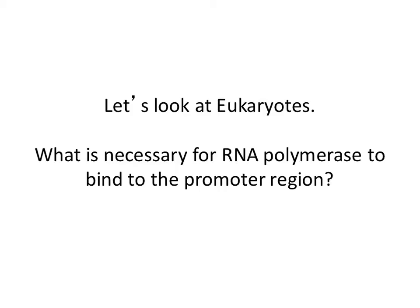Let's look at what is different in eukaryotes when it comes to gene expression. One of the big differences is the RNA polymerase of eukaryotes. In eukaryotes, there are more RNA polymerases available, and the RNA polymerase does not come with a sigma subunit. Remember, in prokaryotes, the RNA polymerase used the sigma subunit to bind to the promoter region directly, but there is no such thing in eukaryotes. So you need other mediators for RNA polymerase to bind to the promoter.